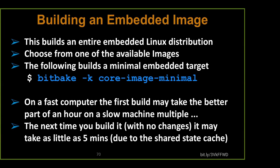In earlier versions you'd see it say 5,000 tasks — then after that complete, it'd say 13,500 tasks, and you'd think, wait, I thought we were done. But you built the toolchain and the natives, now you move on to building the target itself. If you've got shared state cache and have already built it once, it may only take five minutes. If you start with a new library or updated version — like a new version of glibc — it might rebuild everything because everything has to be built against that new version.